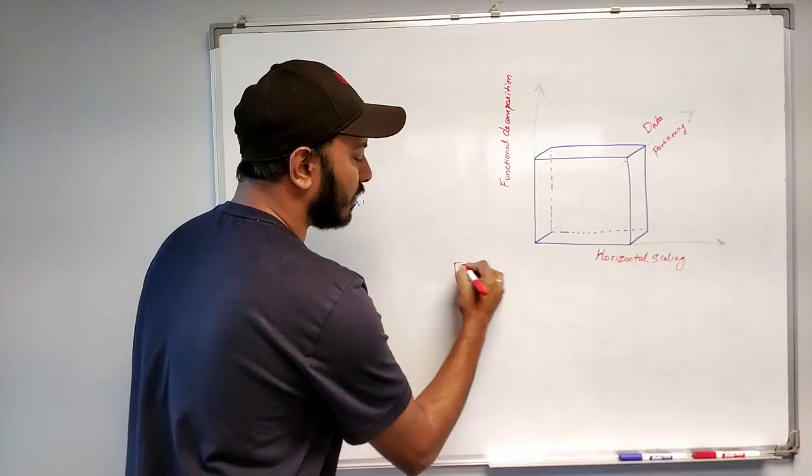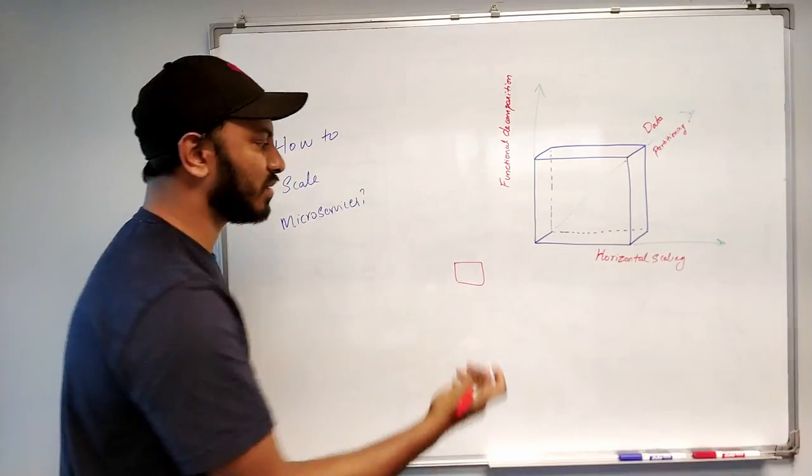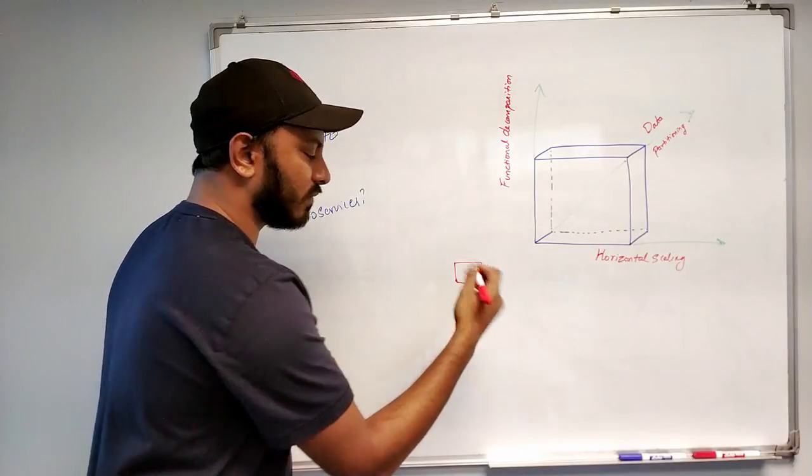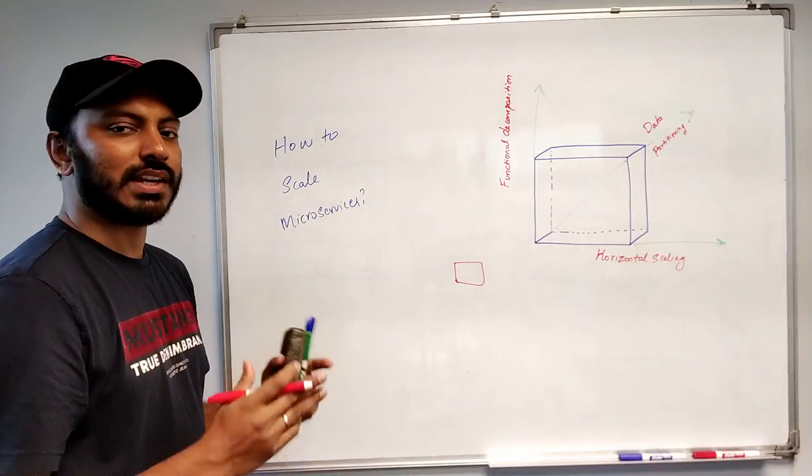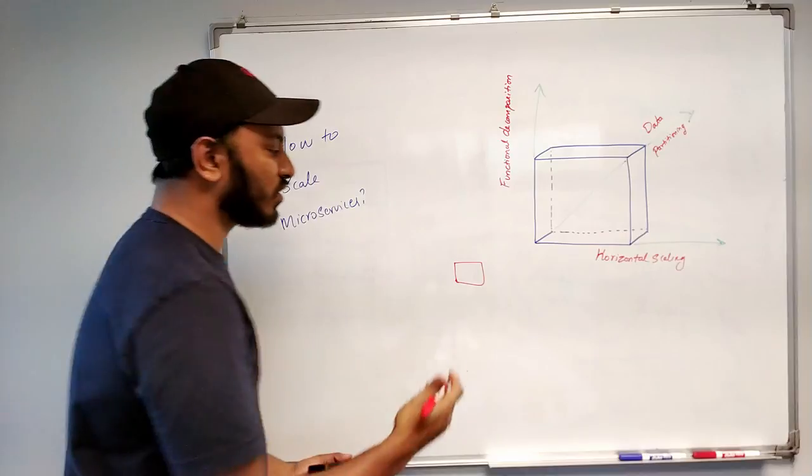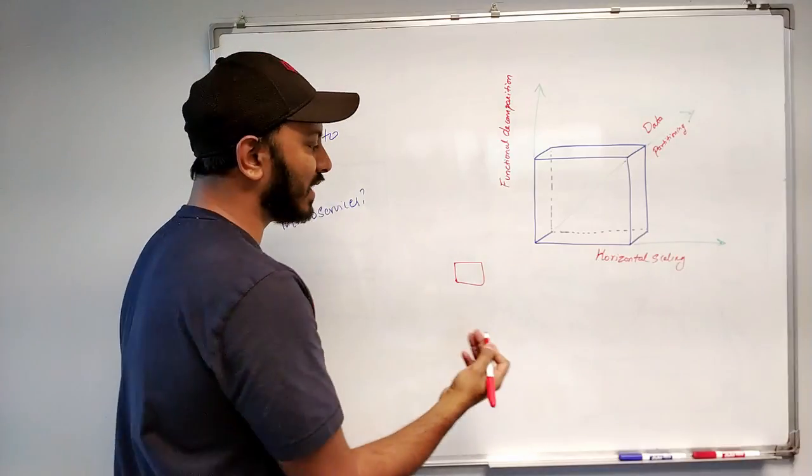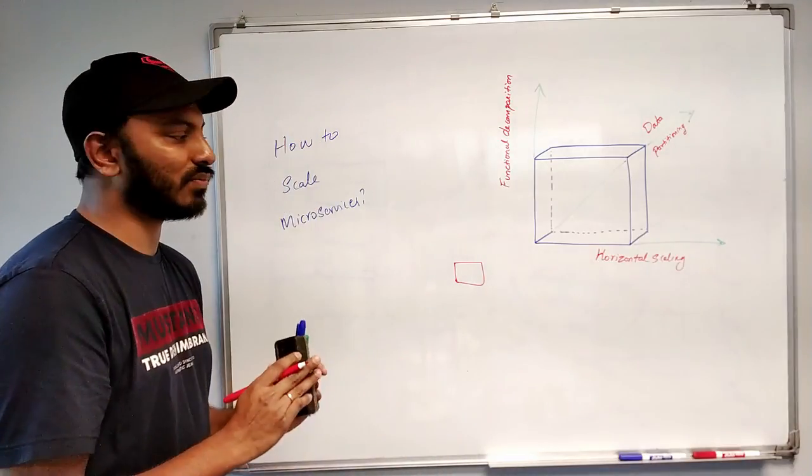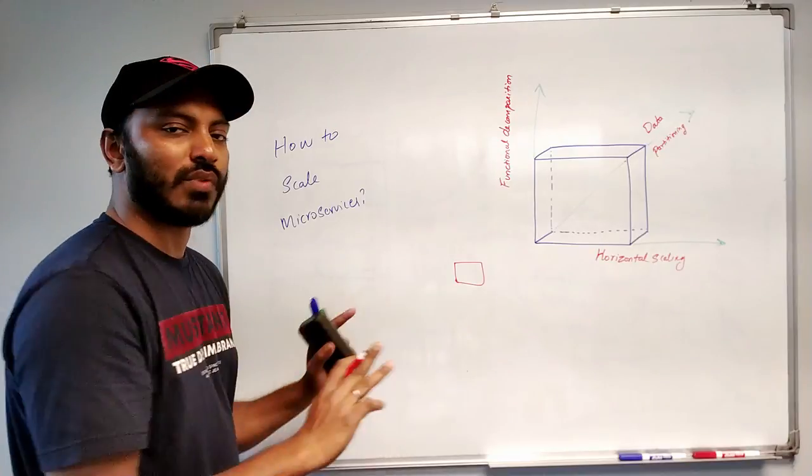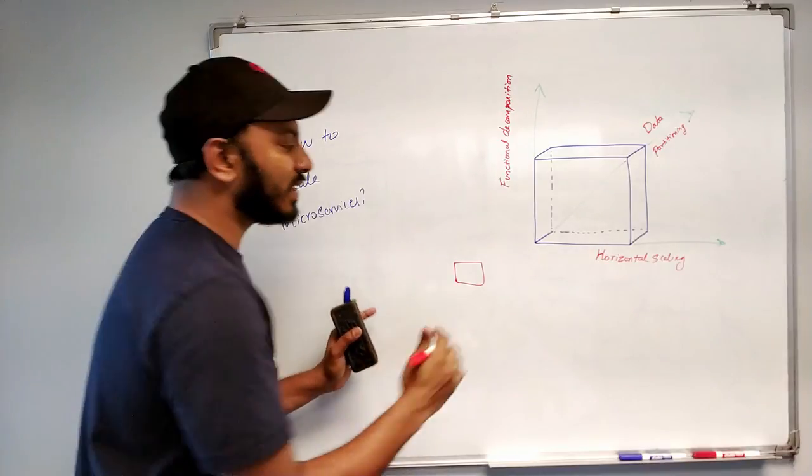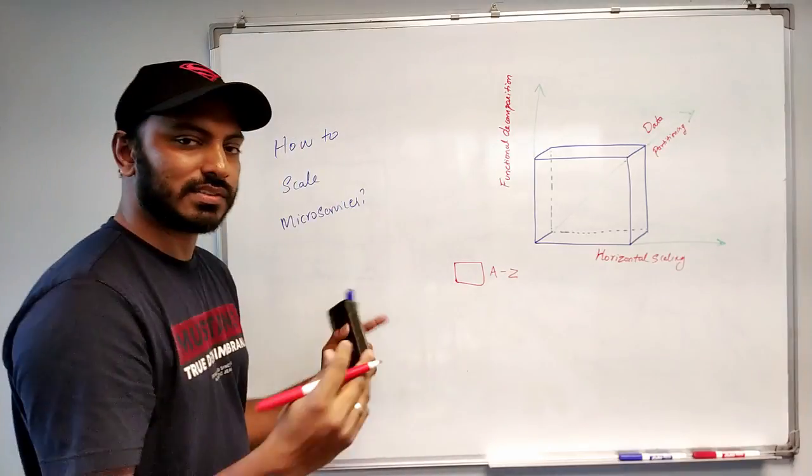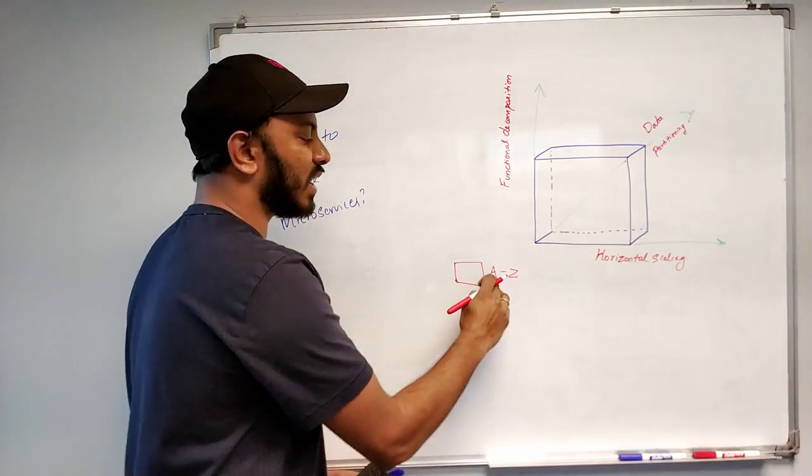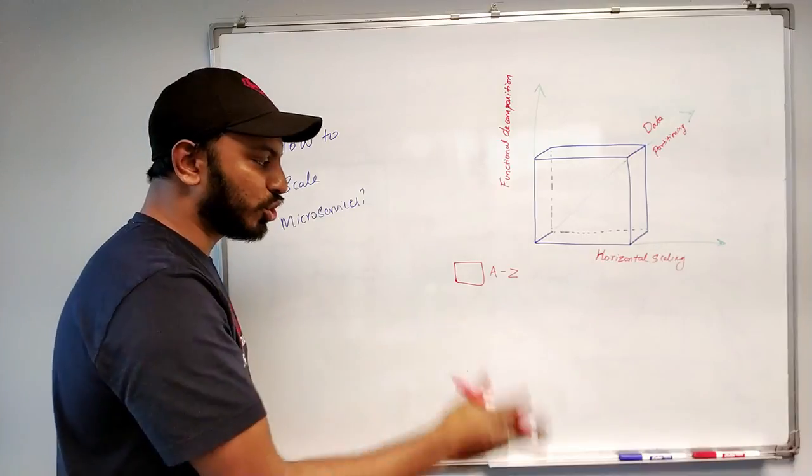Say, suppose you have a microservice, say user management service or user service. Now we want to scale user service using data partition technique. How do we do it? So we have only one service. That means the number of requests we are coming and we are happy with one server. That means that this server is basically now handling all the users starting from the letter A to Z.